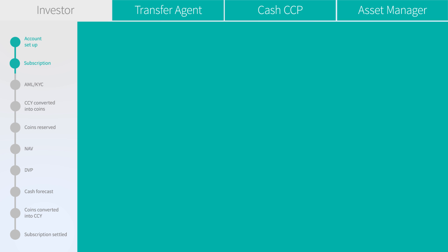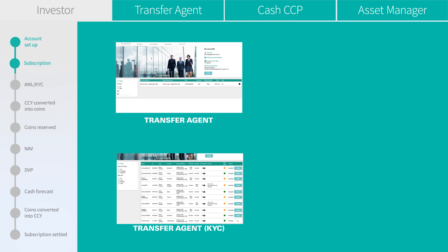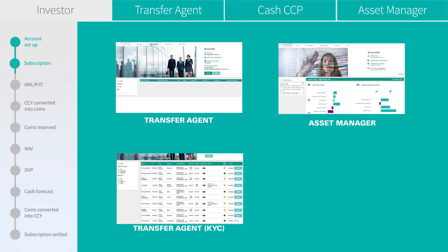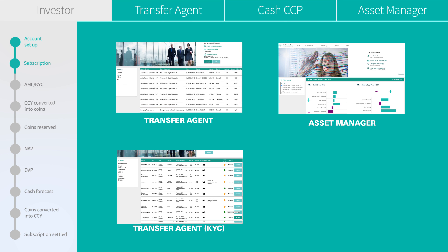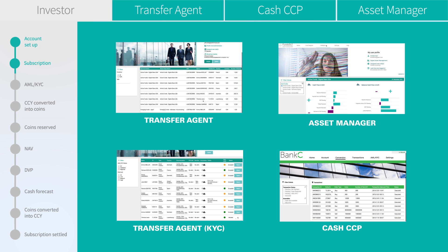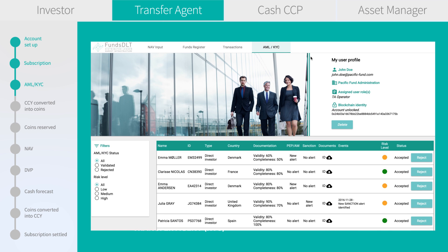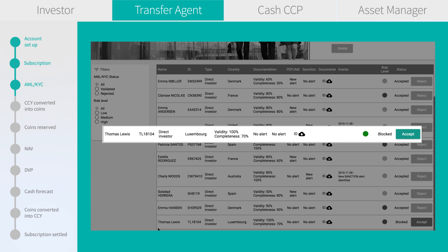The TA can access the register and the order book. The asset manager can have a view on real-time cash flows. The cash CCP knows in real-time the status of the cash in the process.